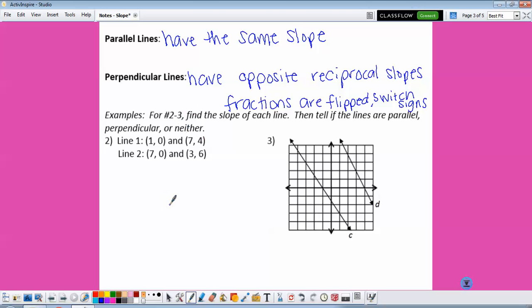So for our examples, find the slope of each line and then tell if the lines are parallel, perpendicular, or neither. So for line 1, M would be equal to Y1 minus Y2, so 0 minus 4 over 1 minus 7. And that gives us a slope of negative 4 over negative 6, which simplifies to 2 thirds.